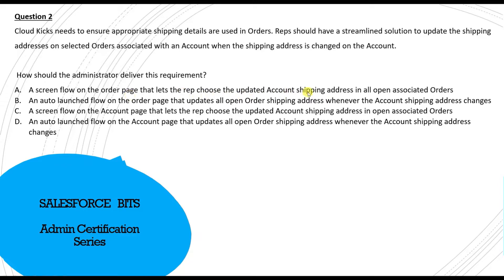Option B is an auto-launched flow on the order page that updates all open order shipping addresses whenever the account shipping address changes. But what would trigger this? When the shipping address changes on the account, you can't invoke an auto-launched flow on the order page — so B doesn't make sense either.